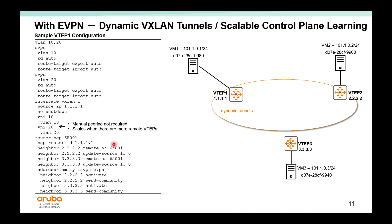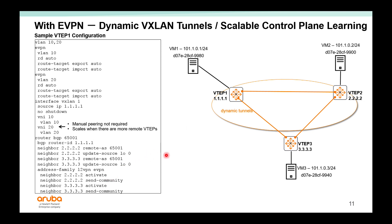On each VTEP, you basically just need to peer to the two route reflectors — there is no need to peer to all other VTEPs, so typically just two remote peers in a deployment. The tunnels are built dynamically between VTEPs through the EVPN address family peering. As long as two VTEPs are interested in the same VNI, a tunnel will be formed.